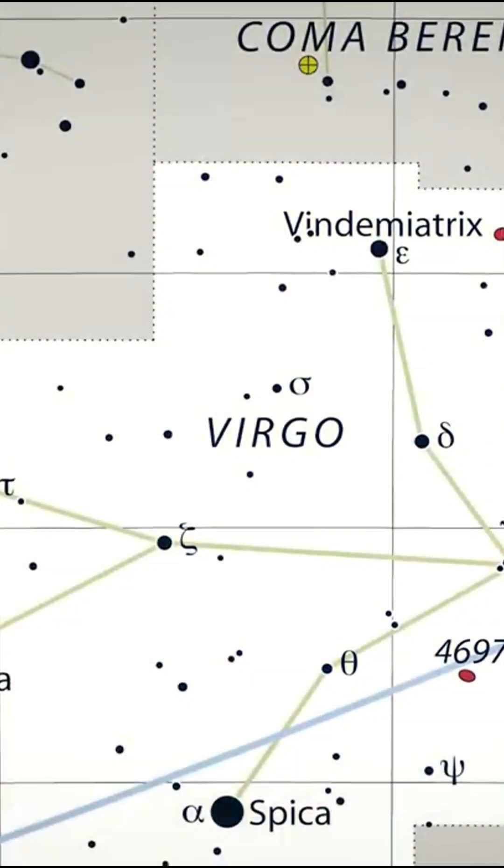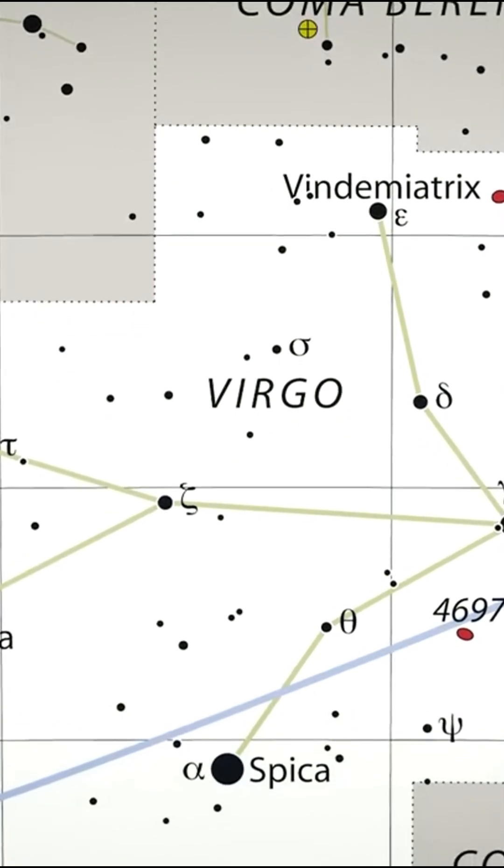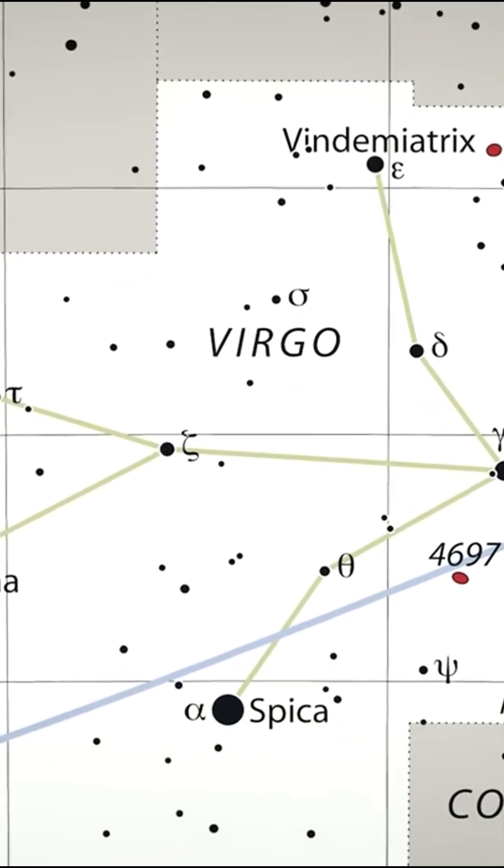The constellation Virgo lies between the constellation Leo to the west and the constellation Libra to the east.